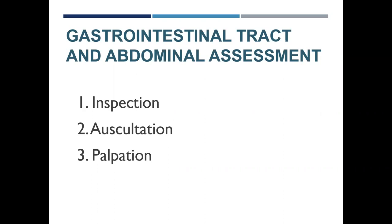Palpation will determine organ size, placement, masses, and pain. We want to do light touch over all four quadrants. The abdomen should be soft, smooth, and pain-free. The patient should be relaxed during palpation because tense muscles will interfere with palpation of underlying organs or masses. In obese patients, bimanual or deep palpation may be required to detect underlying organs. If a pulsation is noted on visual examination, do not palpate that area.